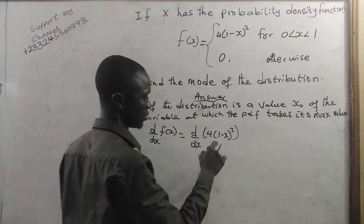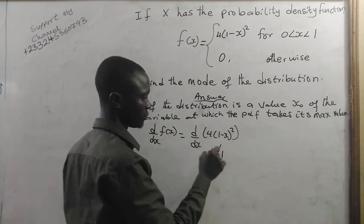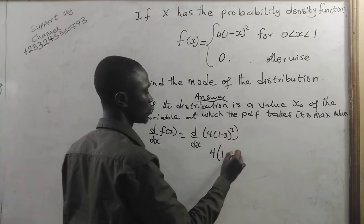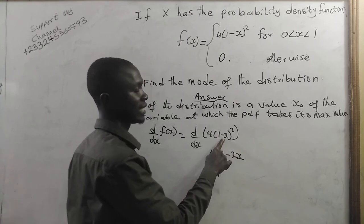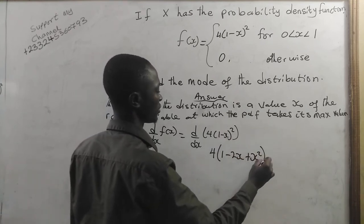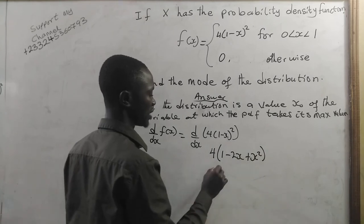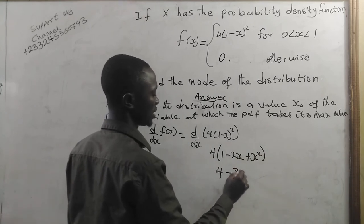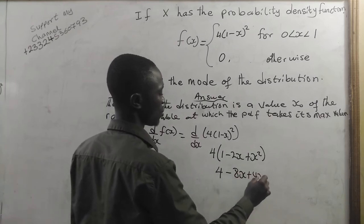This will be 4 times: 1 squared is 1, 2 times 1 times minus x equals minus 2x, and negative x squared is positive x squared. Now, if we expand this, you have 4 minus 8x plus 4x squared.